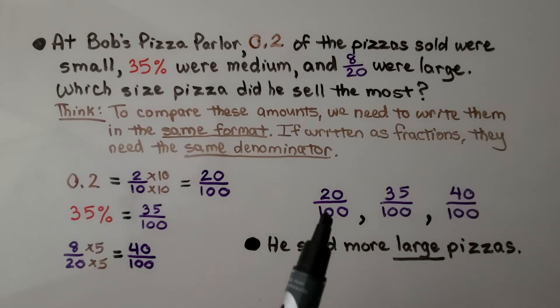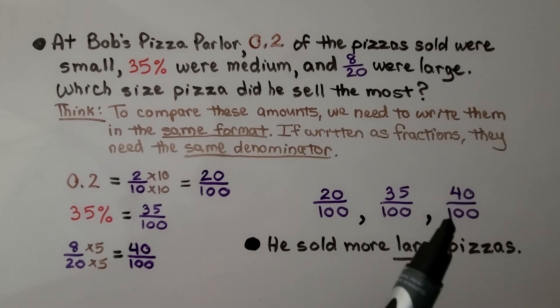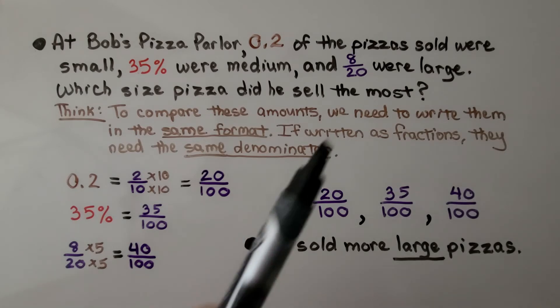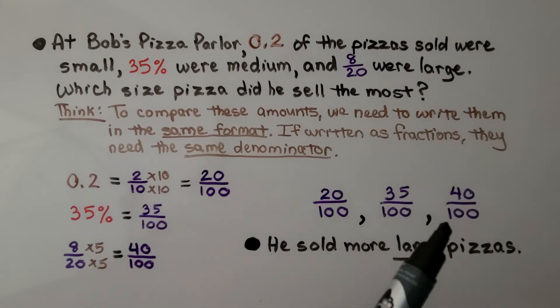Twenty-hundredths, thirty-five hundredths, then forty-hundredths would be in order from least to greatest. We know, because the eight-twentieths were the large pizzas, and that's forty-hundredths, that he sold more large pizzas.